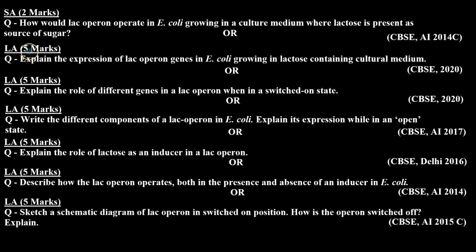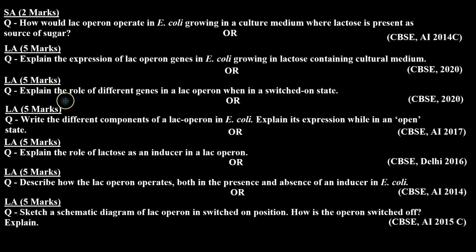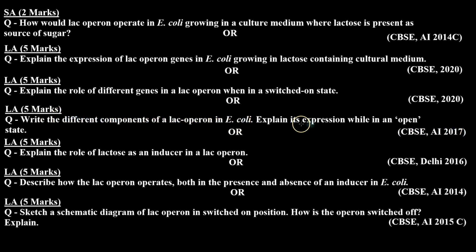The next type is a long answer type question for five marks asked in CBSE board 2020: explain the expression of lac operon genes in E. coli growing in lactose-containing culture medium. Another five-mark question from CBSE board 2020 asks: explain the role of different genes in a lac operon when in a switched-on state. A five-mark question from CBSE board All India 2017 asks: write the different components of a lac operon in E. coli and explain its expression while in an open state.